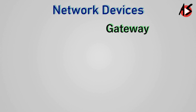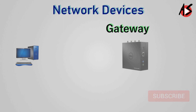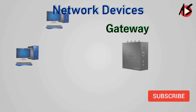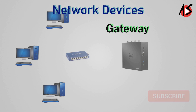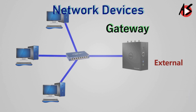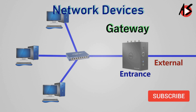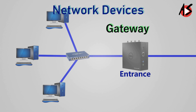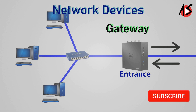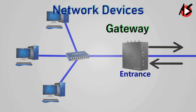Gateway. A gateway is a network device that establishes an intelligent connection between a local area network and external networks with completely different structures. That means it connects two dissimilar networks. In simple terms, it is a node on a network that serves as an entrance to another network. In computer networking, a default gateway is the device that passes traffic from the local subnet to devices on other subnets. The default gateway often connects a local network to the internet.